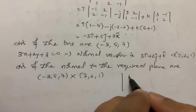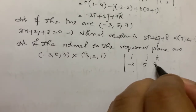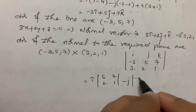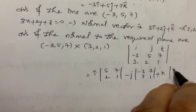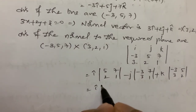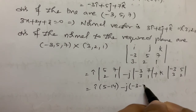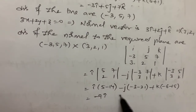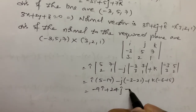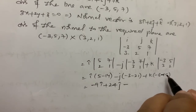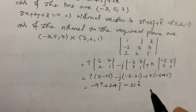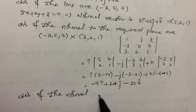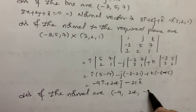Computing the cross product of (-3, 5, 7) and (3, 2, 1): I into (5·1 - 7·2) minus J into ((-3)·1 - 7·3) plus K into ((-3)·2 - 5·3), giving I(5-14) minus J(-3-21) plus K(-6-15), which is -9i plus 24j minus 21k. So the direction ratios of the normal to the required plane are (-9, 24, -21).